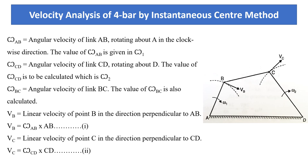This is a four-bar mechanism analysis using the instantaneous center method. The figure shows a four-bar mechanism consisting of fixed link AD, input link AB, output link CD, and a coupler or connecting link BC. The input link AB rotates about fixed point A, and the output link CD rotates about fixed point D. Let link AB rotate at uniform angular velocity; it is required to find the corresponding motions of the remaining two links BC and CD.